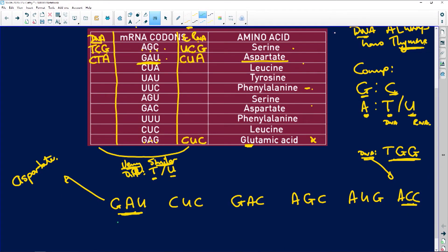Now it says a mutation has occurred, which resulted in the following base sequences on the mRNA. So clearly this mRNA has changed. So let's quickly do this. So we've got GAUCUC GAC AGU, so here's our change, and then AUGACC. So there we go, there's the change.